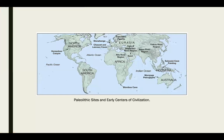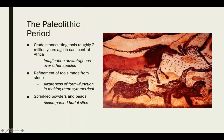With the Bronze Era, this is a map of the different Paleolithic sites and early centers for civilization we're going to talk about. We're mostly going to be focusing in the Bronze Era in this little area of Eurasia and Africa, where a lot of the early examples will take place. Let's talk about the Paleolithic period — the earliest period before even the Bronze Age occurs.